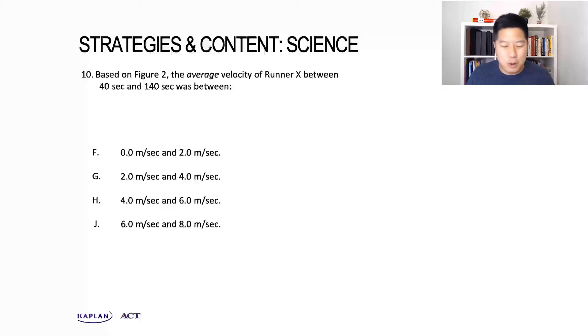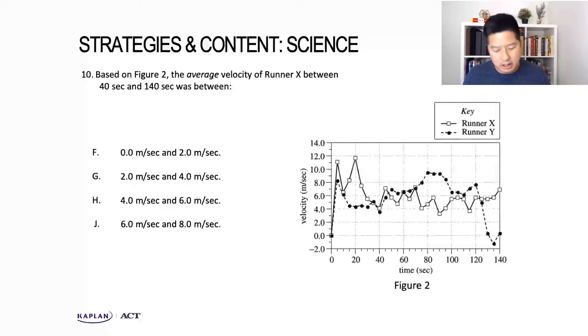In this question, we're asked to find the average velocity of runner X, and we're taking a closer look at Figure 2 to do so. Remind yourself you're looking at runner X specifically, the average velocity between the time interval of 40 and 140 seconds. Another way to think about average is: where do most of the data points lie?